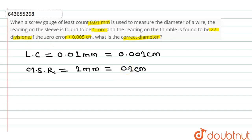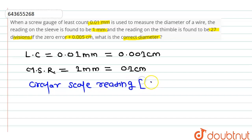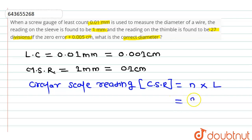Now, the value of circular scale reading, which is generally indicated by CSR, will be equal to the number of divisions multiplied by the least count. So here the number of divisions are 27, into the value of least count which is 0.001 centimeter. So it will be equal to 0.027 centimeter.